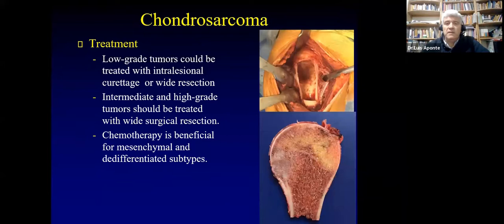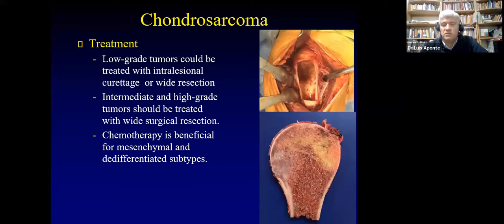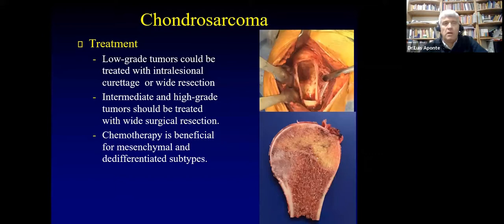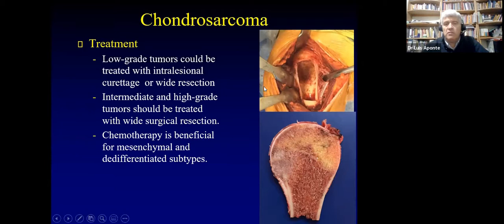Treatment: for low-grade chondrosarcoma (the most common), you can perform curettage or wide resection. For intermediate or high-grade, or dedifferentiated chondrosarcoma, you must perform resection. For the highest grades, chemotherapy can be given, but only for the approximately 10% that are dedifferentiated to osteosarcoma or UPS. Survival in low-grade is greater than 80%, decreasing as grade increases. Remember: low grade allows intralesional curettage; intermediate, high grade, and dedifferentiated require resection.